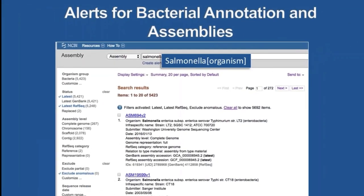You can also get alerts for bacterial annotation and assemblies. This is particularly useful in the microbial realm. For example, if I wanted to see new releases of salmonella — either assemblies or annotations — I could do this search in the NCBI assembly database. I believe the NCBI assembly database is a very clean and useful resource for finding genome assemblies.